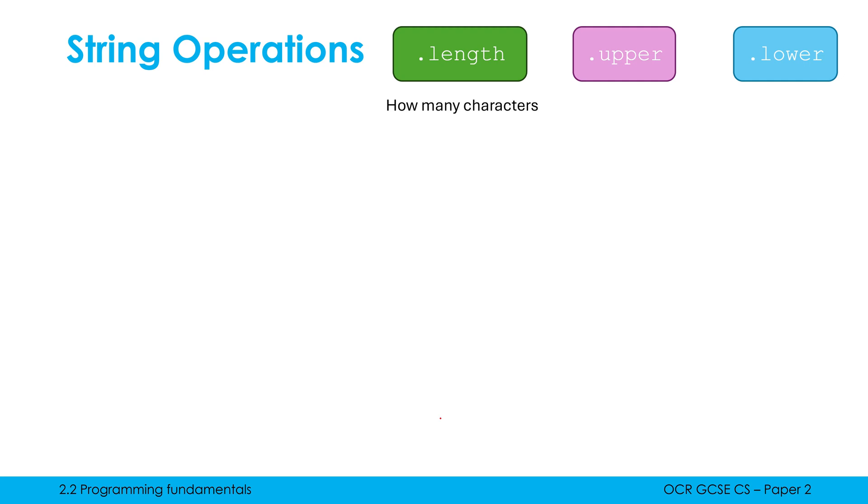The dot length we've used before and I've shown you it in examples before, this gives you how many characters a string has. We also use dot length with arrays. Dot upper will give you the uppercase version of your string and dot lower will give you the lowercase version of your string. All of these are useful, all of these are used really often, so you need to be comfortable with them either in URL or in your own programming language.